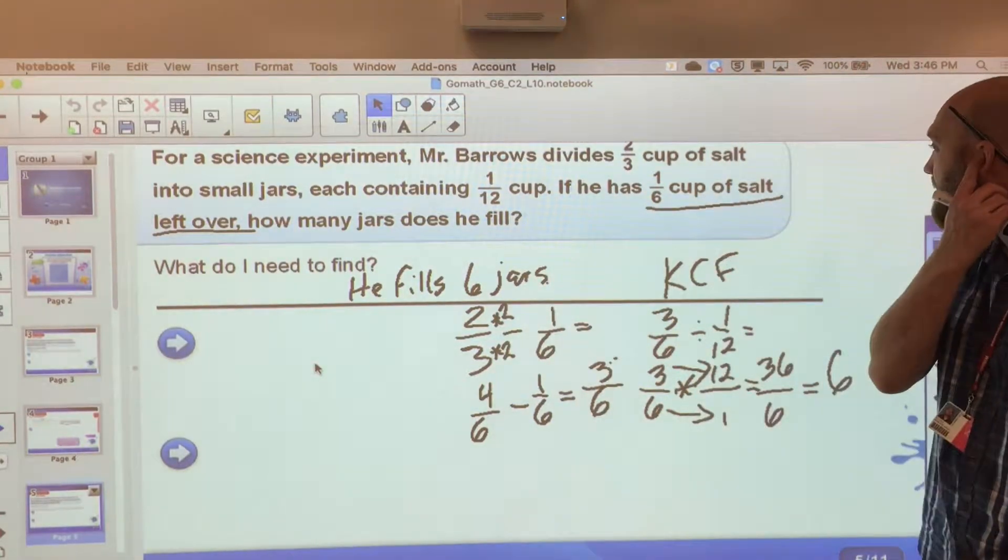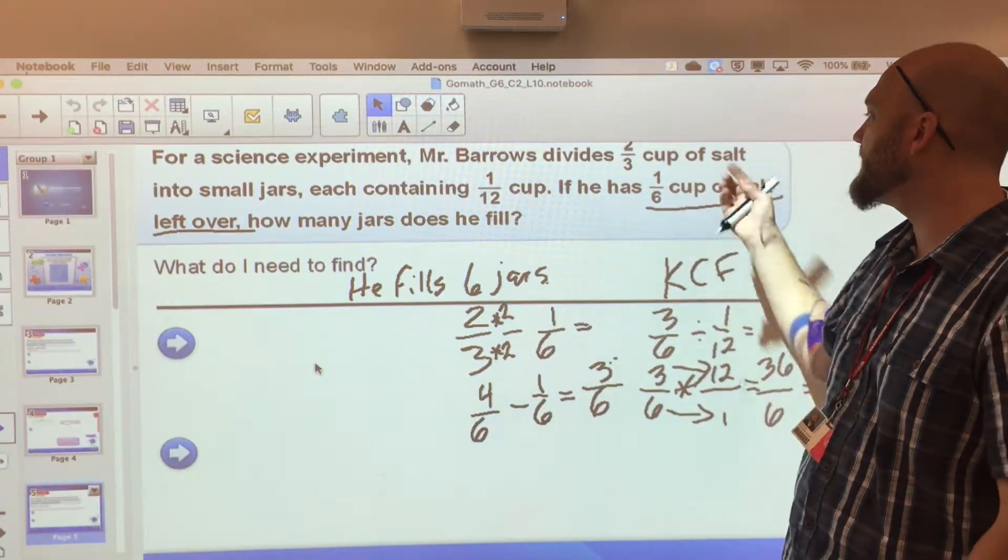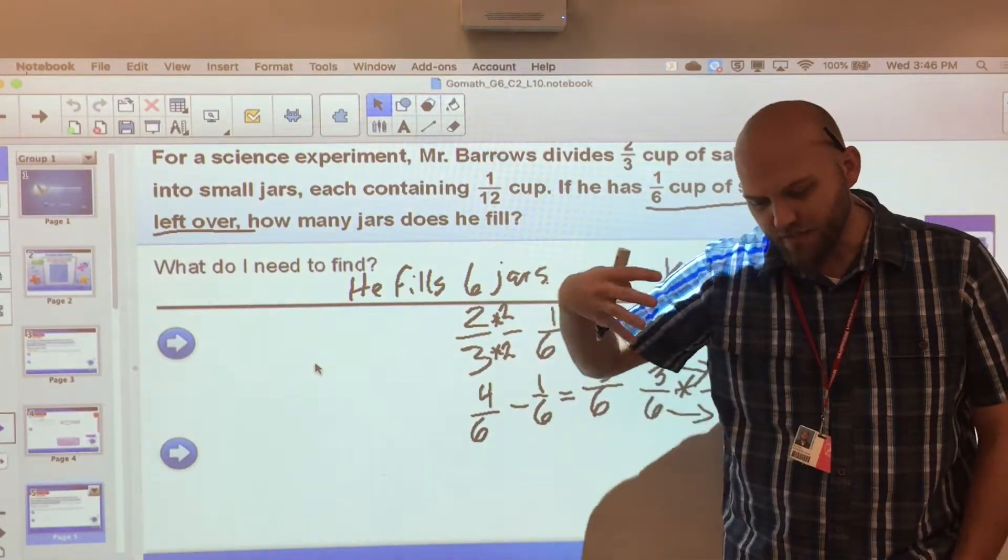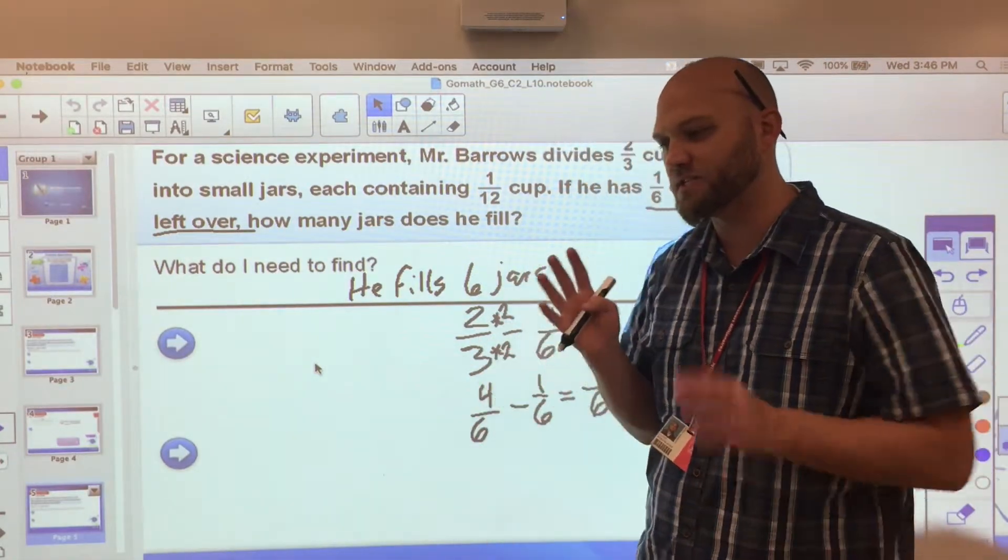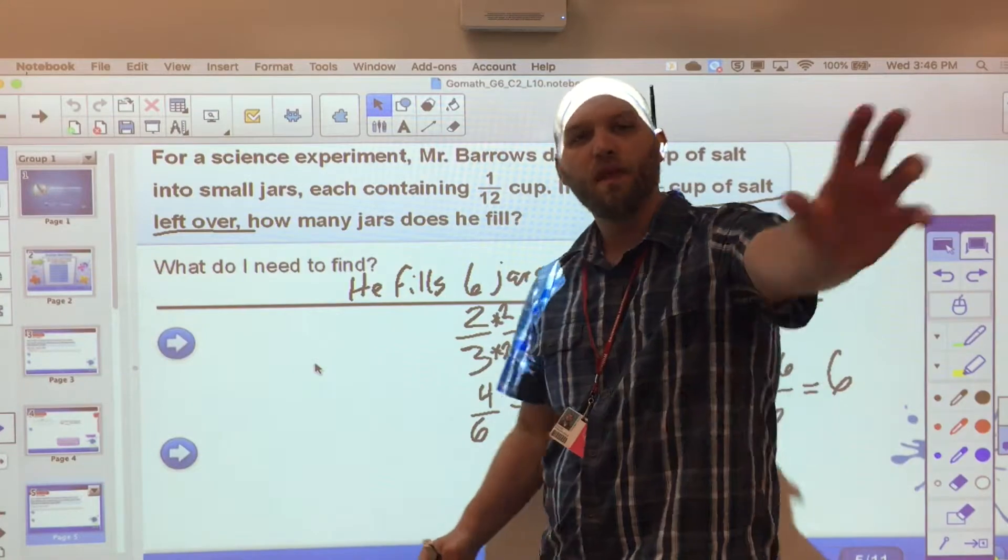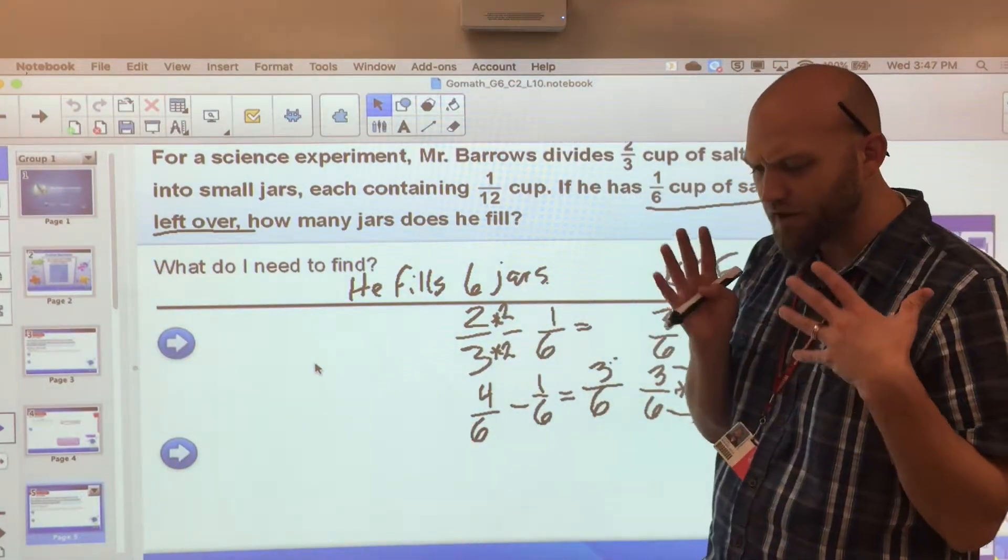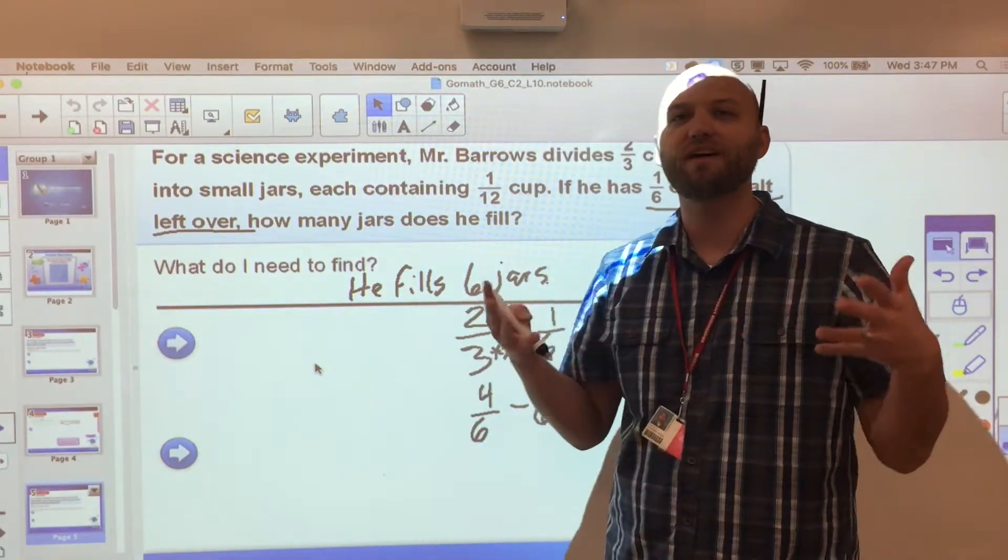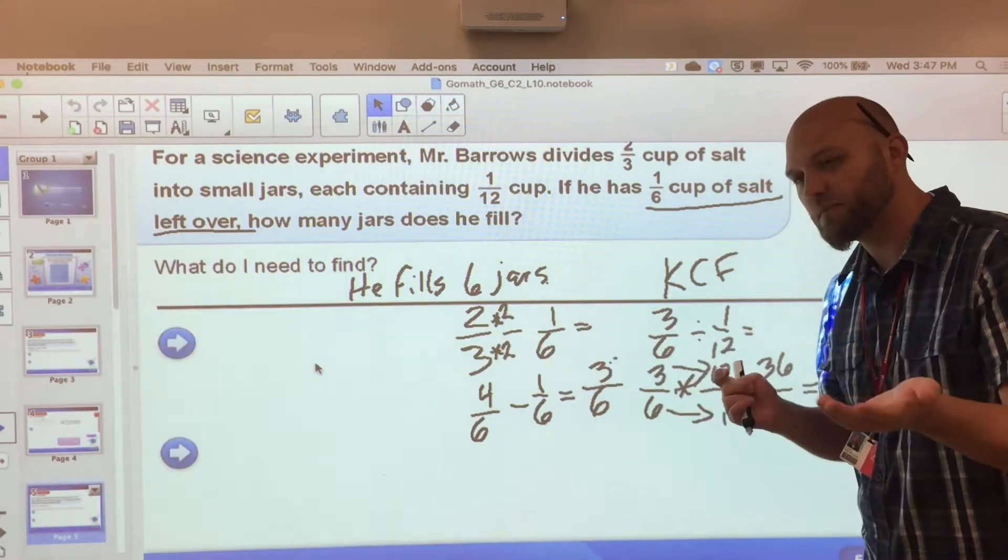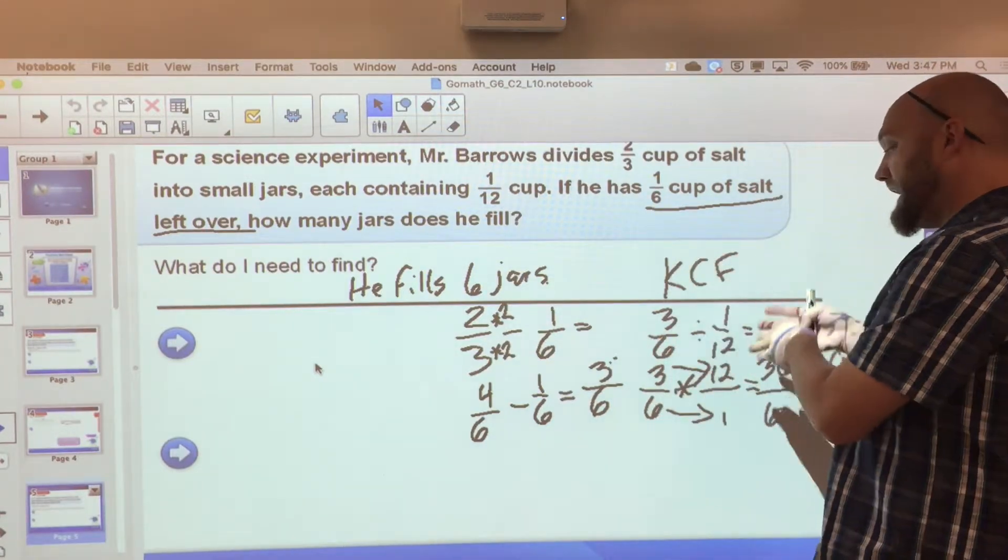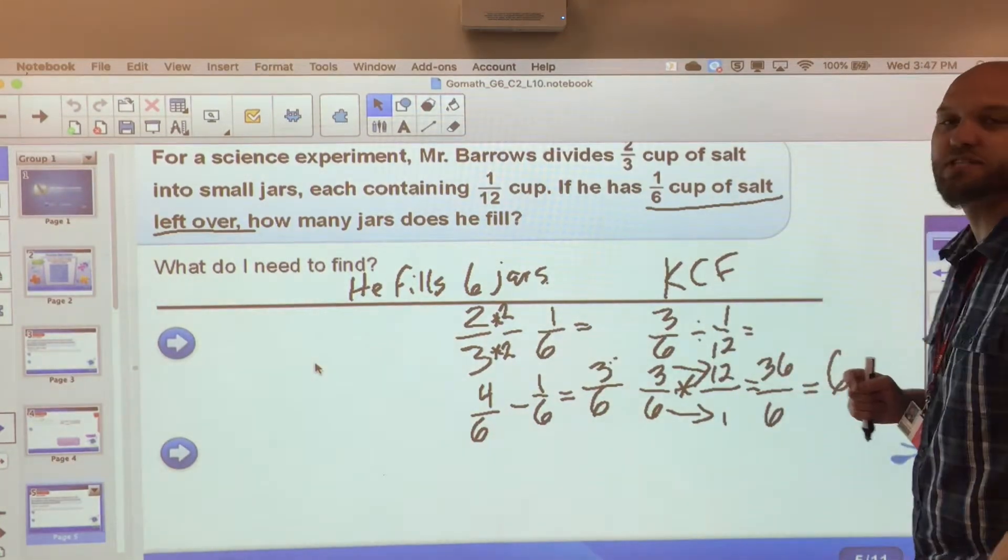The goal being: Mr. Barrows divides two-thirds of a cup of salt into small jars, each containing one-twelfth of a cup, and he has one-sixth left over. So I ask myself, number one, what can I get rid of right away? There's multiple steps to this problem, so let's just take what's left over and move it to the side. So I subtract the one-sixth. And then I say, now I know what I've used, what do I have to divide that up into? These one-twelfth jars. So then I take my three-sixths, or my what would simplify to one-half, and I divide it into one-twelfth cups, and then I find out that I'll have six of them.